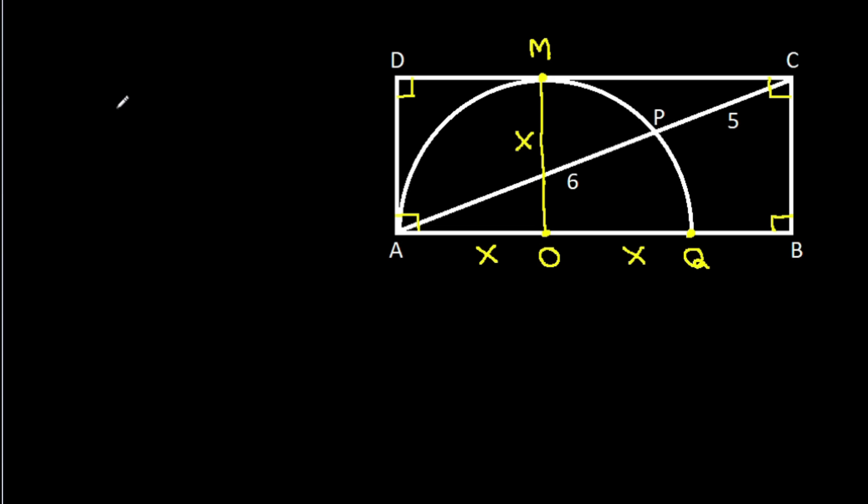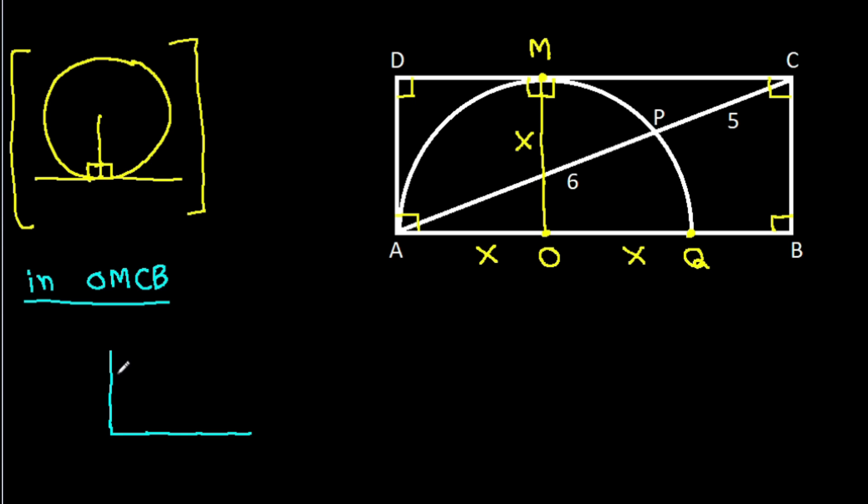And in any circle, radius and tangent are perpendicular to each other. So OM will be perpendicular to CD. And in OMCB, these three angles are 90 degrees. So this angle will also be 90 degrees. That means it will be a rectangle.